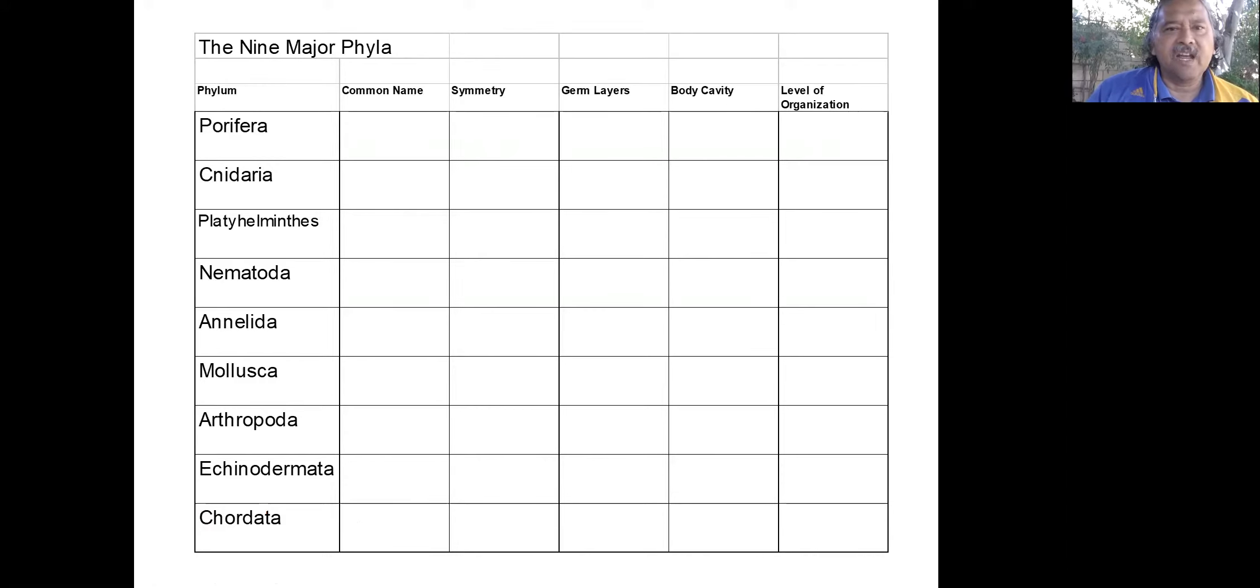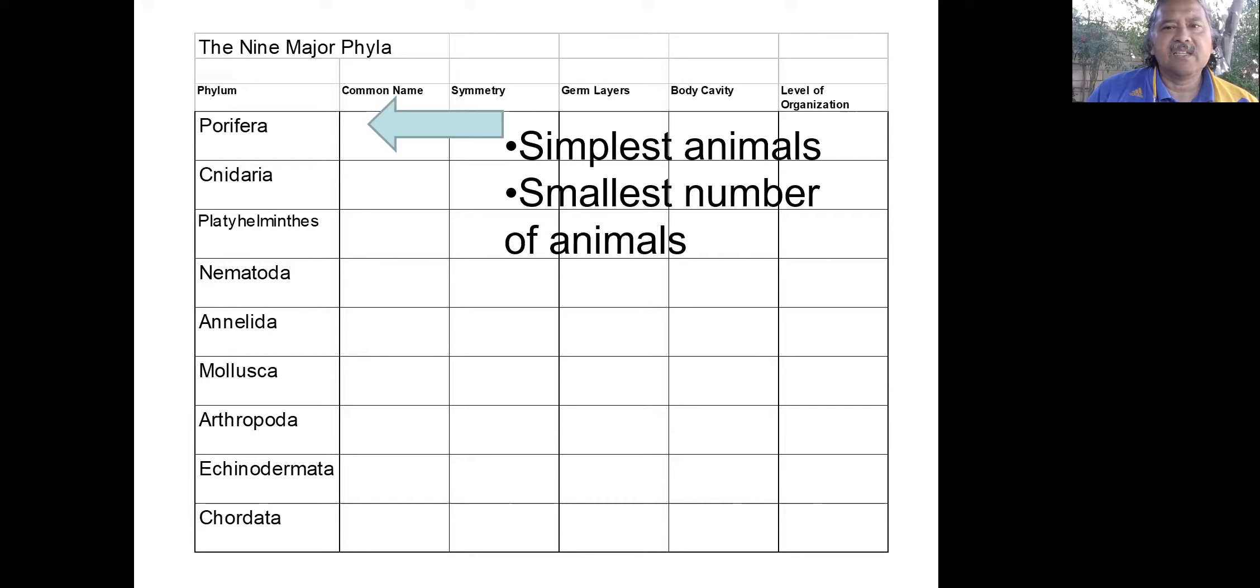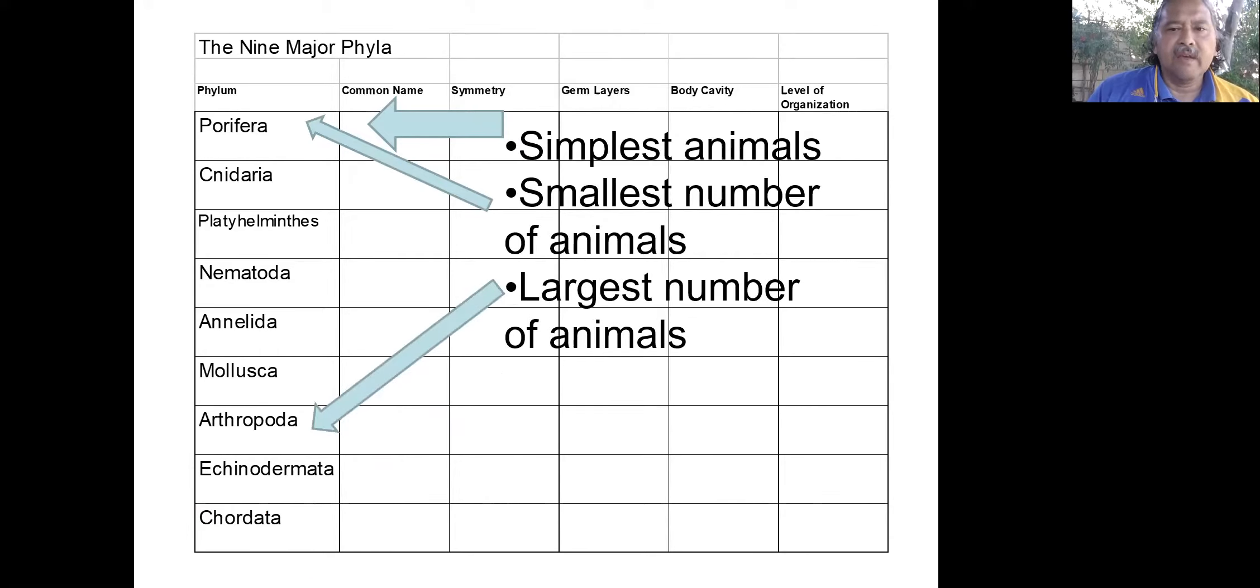And so there it is again, the nine major phyla. We're going to learn these this way. But here's some fun facts that you need to know. We have the porifera. It's the group that has the simplest animals. Then we have the largest number of animals is the arthropoda right there. And like I said, a million out of the 1.6 million. Most complex animals at the very bottom. It goes from simplest to most complex. And so the chordata are the most complex. So those are some things you need in order to do one of the following assignments. So I wanted you to make sure you knew those facts.